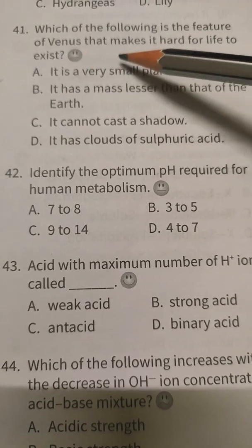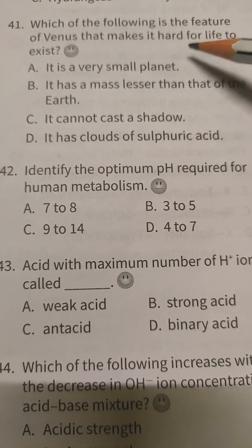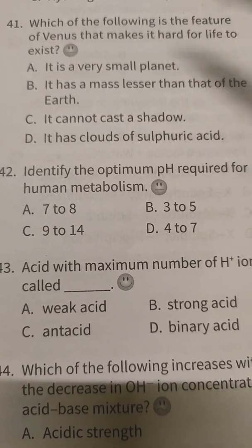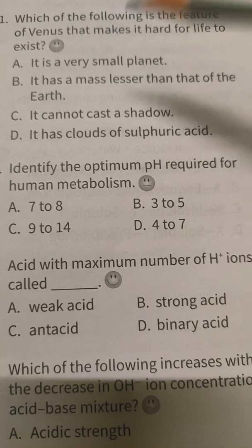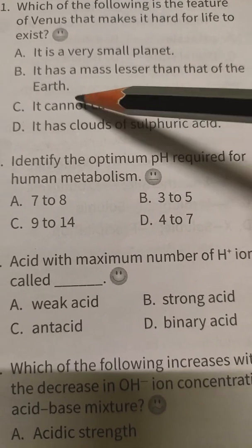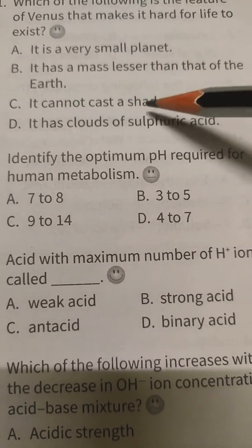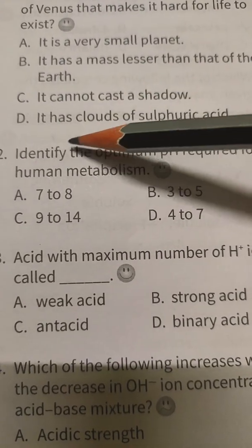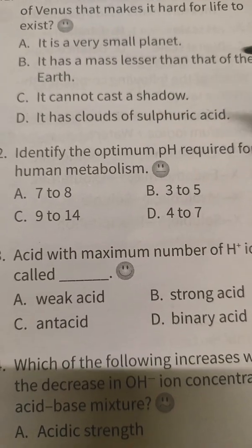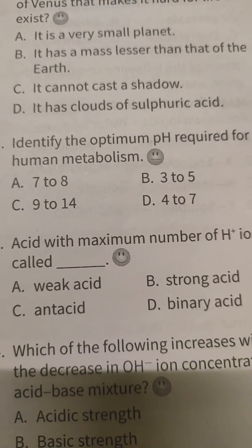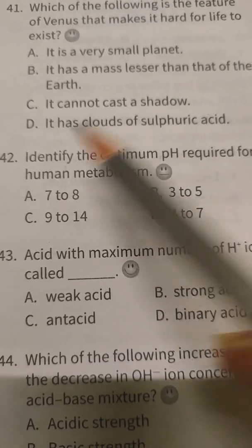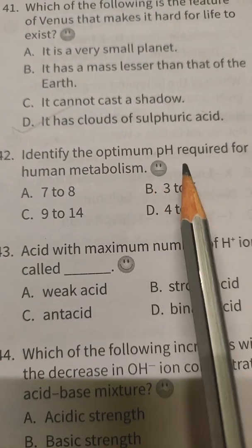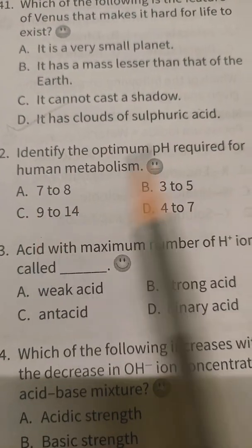The following is the feature of Venus that makes it hard for life to exist. It is a very small planet, it has a mass lesser than that of Earth, it cannot cast a shadow, and it has a cloud of sulfuric acid. The correct option is: it has a cloud of sulfuric acid.